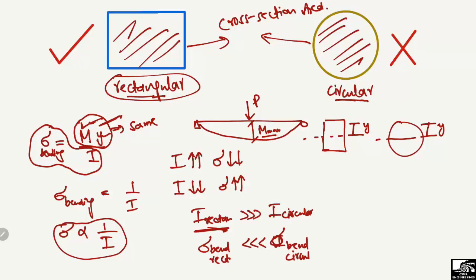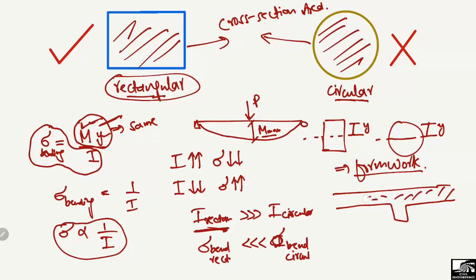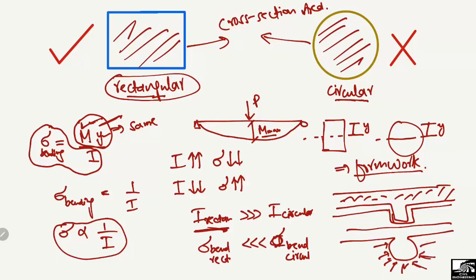Another reason is the difficulty of formwork. We cannot provide good formwork for circular beams compared to rectangular ones. For example, for a rectangular beam or T-beam, we can easily provide formwork, but for a circular beam it is very difficult. However, this is not the major reason — the major reason remains the higher moment of inertia of the rectangular cross-section.